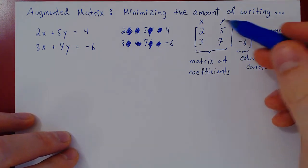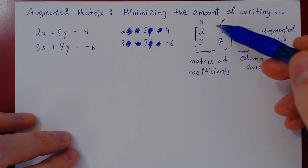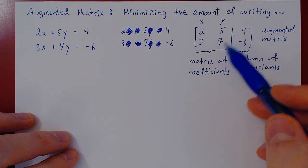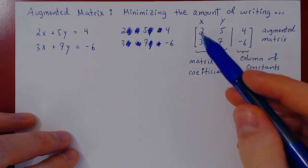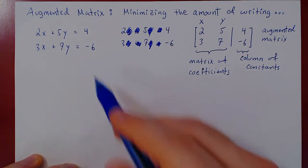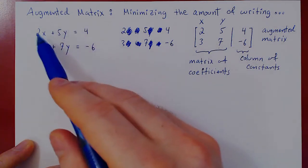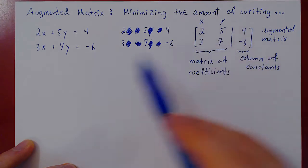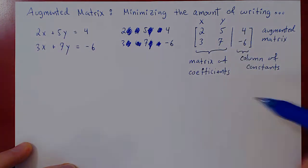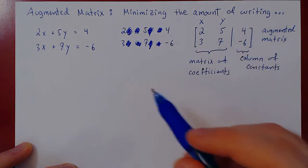By using this approach, we only write x and y on top of our augmented matrix the very first time, just to remind ourselves which column is which. We don't write the pluses, the equal signs, or the variables again. We can go back and forth: from the linear system to the augmented matrix, where the first equation becomes the first row and the second equation becomes the second row.